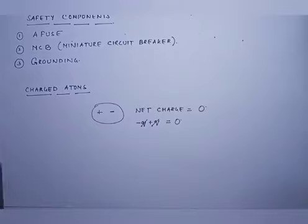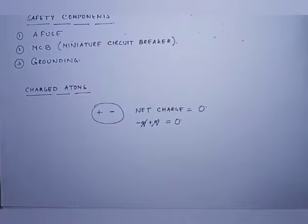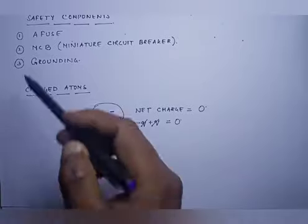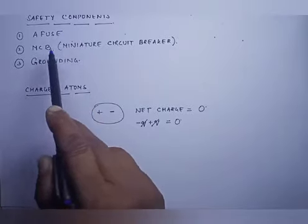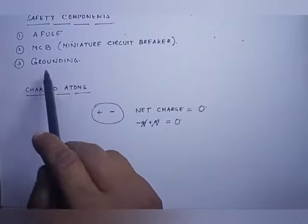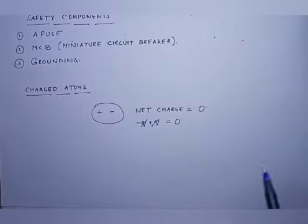Let us move to another topic — safety components. As we are talking about electrical current, electrical circuits, and electricity, there are various safety components which keep us away from the harm of electricity. These are: a fuse, Miniature Circuit Breaker (MCB), and grounding.